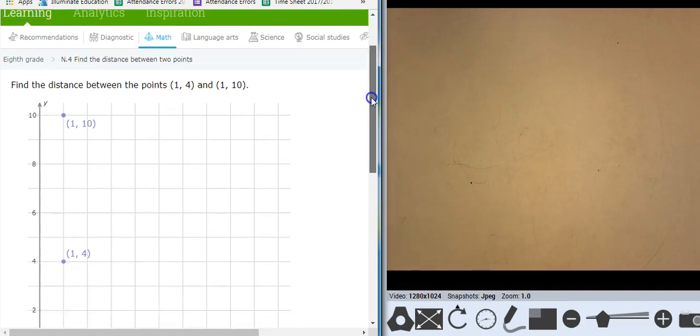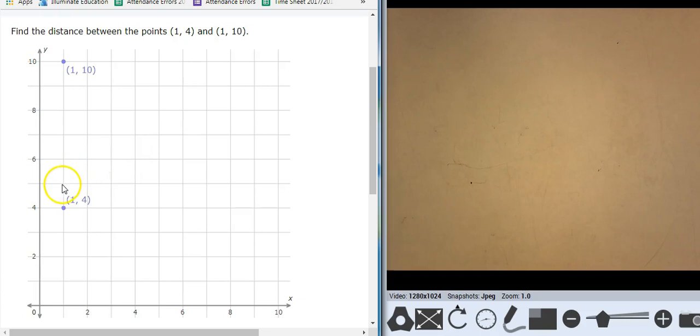So here's our first one. Now this one, the points are just vertical, so I'll just count the distance. So this is 1, 2, 3, 4, 5, 6 units.